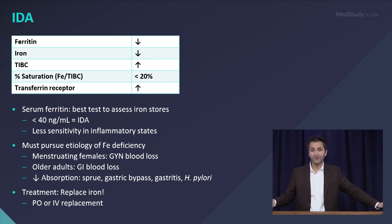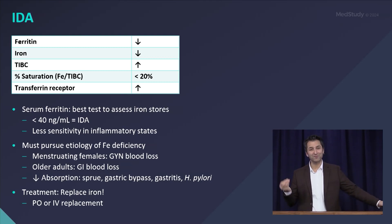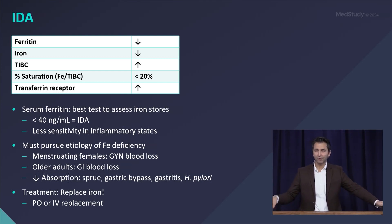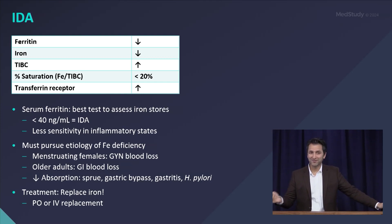Once you diagnose iron deficiency, you're not done — you must pursue the underlying cause, because in the vast majority of adults with iron deficiency, the cause is blood loss of some sort, which is often occult. If given a case with a young menstruating female, think about gynecologic blood loss. In older patients, it's occult GI blood loss until proven otherwise.